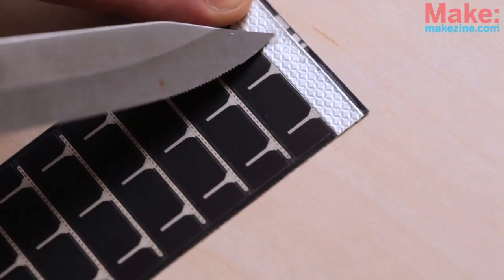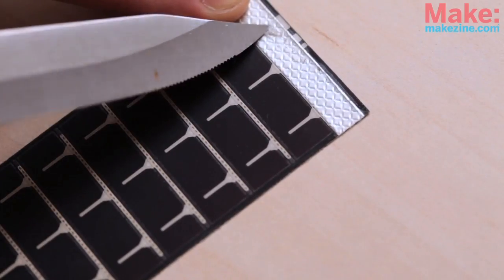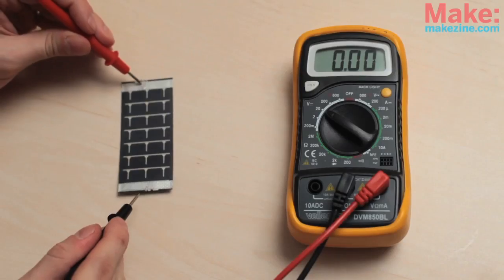To access the contacts of these solar cells, first use your knife to scrape away the plastic coating. Then switch your multimeter into voltage mode and put a probe on each contact.